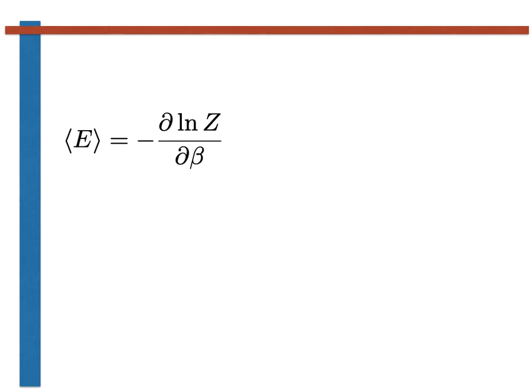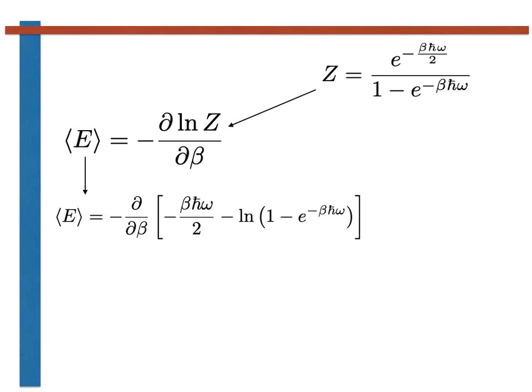Let's now consider the average energy for this quantum harmonic oscillator. Inserting the expression that we just derived into the derivative on the slide gives us the following. The differentiation here is not as straightforward as the differentiation we had to complete in the classical case. Even so, it is nevertheless straightforward to arrive at the following expression for the average energy.